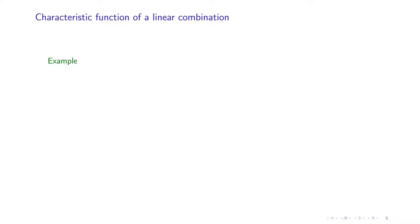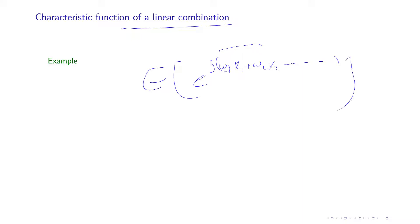In another example, characteristic functions are easy to use when dealing with any linear combination. We have e to the power of j times (omega_1 x_1 + omega_2 x_2 + ...), and the expected value of that is the characteristic function. Because this is a linear combination, we can choose different values for omega_1, omega_2, etc. Using characteristic functions when linear combinations are involved makes everything simpler.